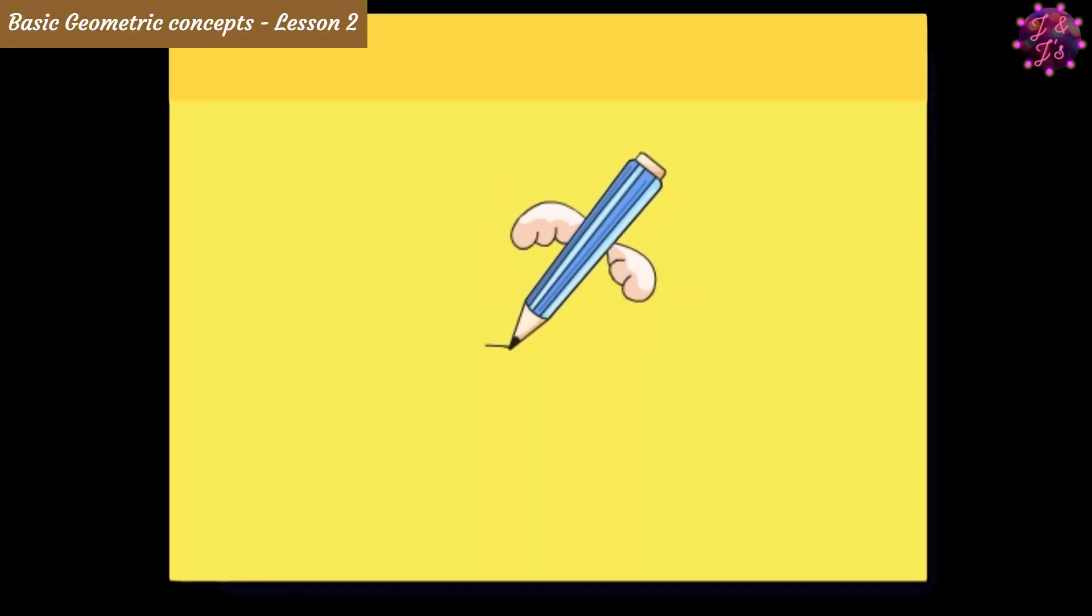Now take a paper, pencil, and ruler. Then, draw a ray like how I am doing. Then next, make two points. One at the end, and another one in any place on line.